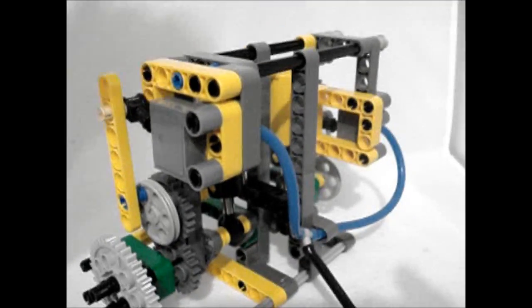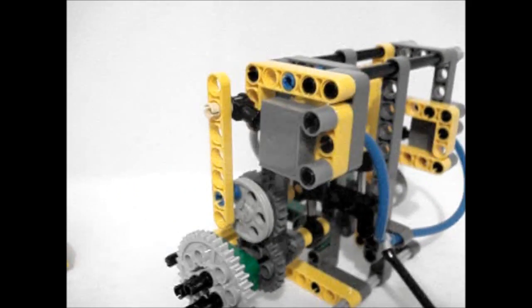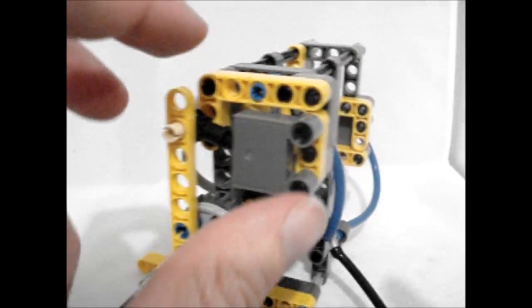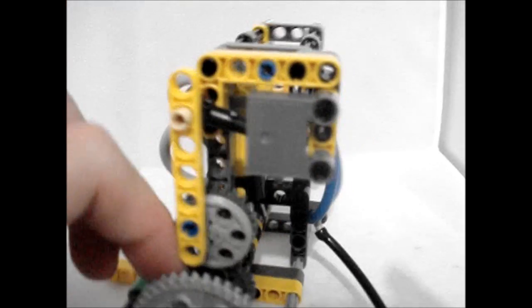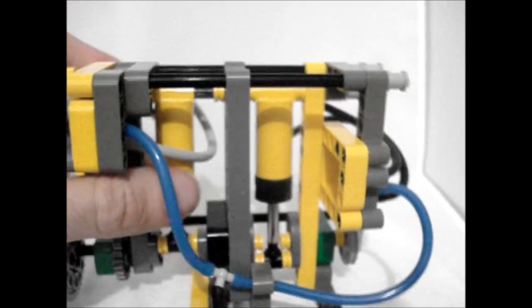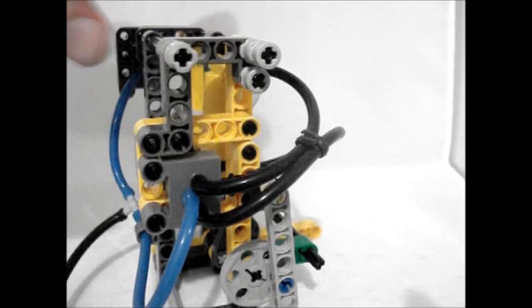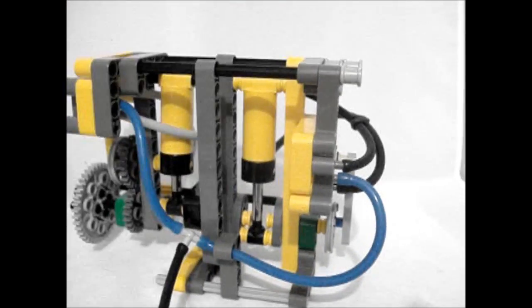So let's have a look at the valve gear before we go any further. I've implemented two switch blocks here. As you can see, these are the LEGO pneumatic switch blocks. And this one services the second cylinder, or the rear cylinder, and this one here on the front services the front cylinder, or the number one cylinder.